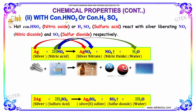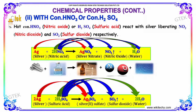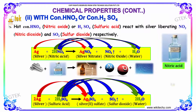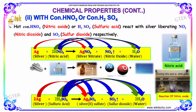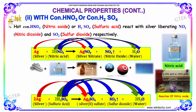With concentrated nitric acid or concentrated sulphuric acid, silver reacts liberating nitric oxide and sulphur dioxide respectively. Silver with concentrated nitric acid gives silver nitrate and nitrogen dioxide or nitric oxide with water. Silver reacts with sulphuric acid to give silver sulphate, sulphur dioxide, and water.